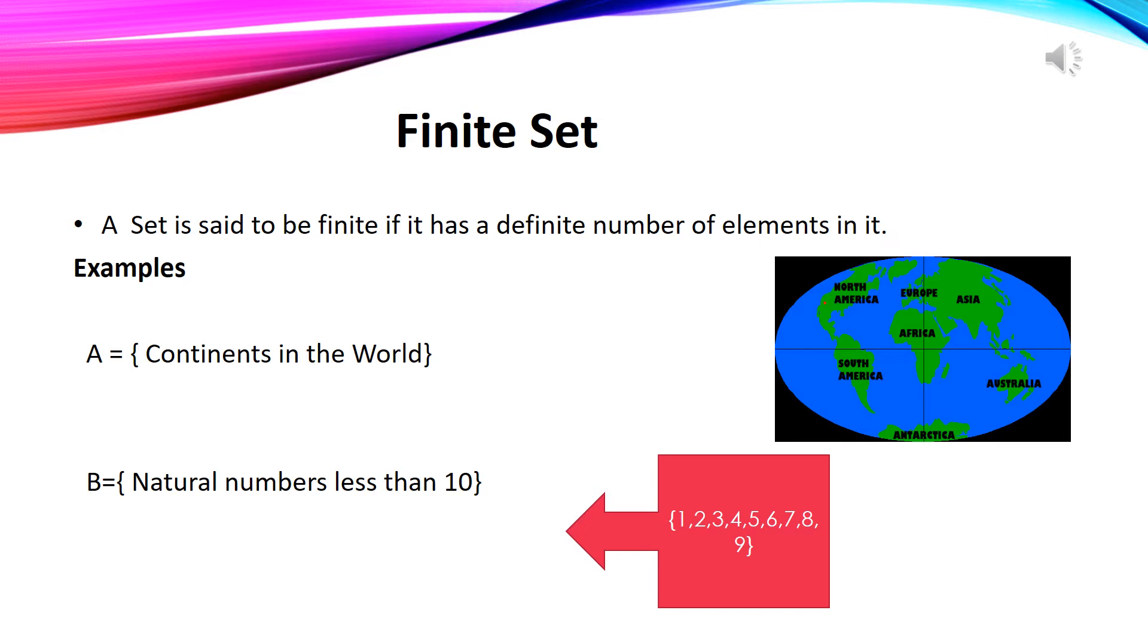Similarly, if we have set of natural numbers less than 10 it is also countable and it would be 1, 2, 3, 4, 5, 6, 7, 8, 9. We can examine that it is very easy to count the elements of the above two sets. So the given sets are finite sets.